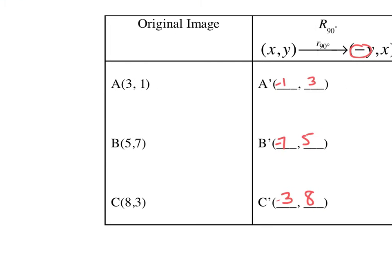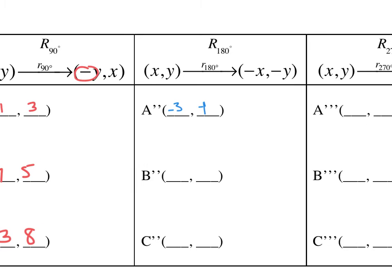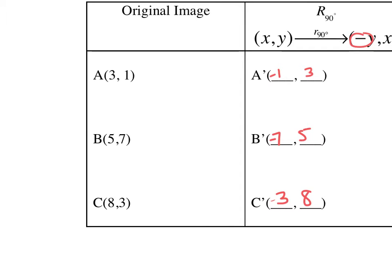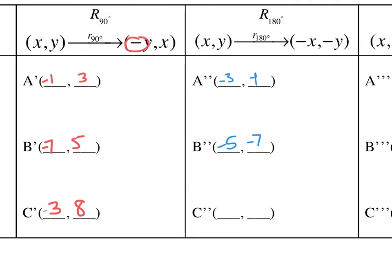I start with (5,7). So I'm going to keep (5,7). But again make them both negative. I start with (8,3). I hope you see the pattern. I end with (8,3). But again I just make them both negative. So I'm ending with (-8,-3).